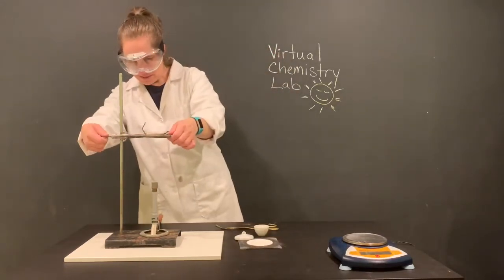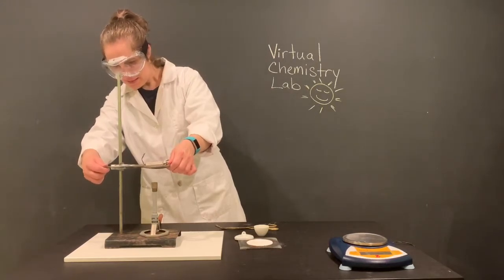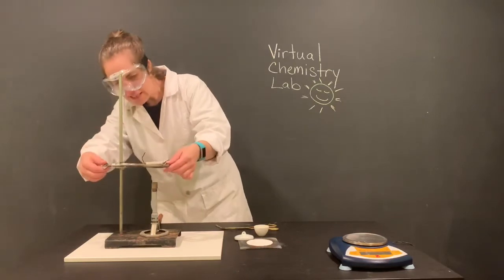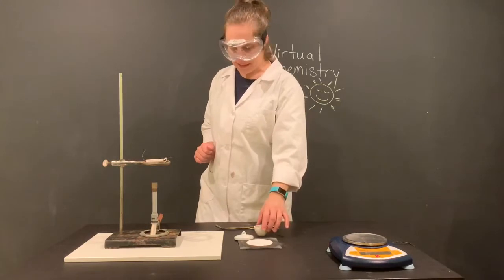We want the bottom of the flame to kiss the bottom of our crucible. So I'm going to bring this down, estimated here, just about there, just so that we have a few inches and it will still kiss our flame, or the bottom of our crucible there.